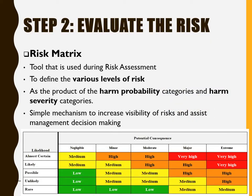Step 2: Evaluate the risk using a risk matrix. It is a tool used during risk assessment to define the various levels of risk as the product of the harm probability and harm likelihood categories — listed vertically in the image as negligible, minor, moderate, major, and extreme. It is a simple mechanism to increase visibility of risks and assist management decision making. Biohazardous agents and procedures can also be classified in this manner.